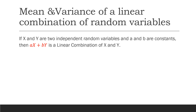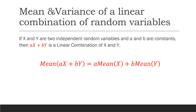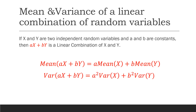We can find the mean and variance of a linear combination of independent random variables. If x and y are two independent random variables and a and b are numerical constants, then ax plus by is a linear combination. The mean of ax plus by equals a times the mean of x plus b times the mean of y. The variance of ax plus by equals a squared times the variance of x plus b squared times the variance of y.